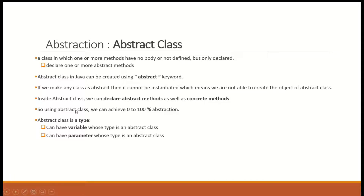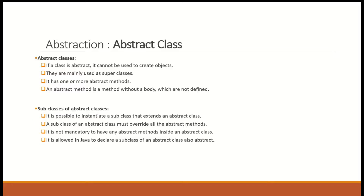Using abstract class, we can achieve 0 to 100% abstraction. Abstract class is a type — you can have a variable whose type is an abstract class, and you can have a parameter whose type is an abstract class. We will see that in examples with variables, parameters, etc. Let's see a review of the abstract class.